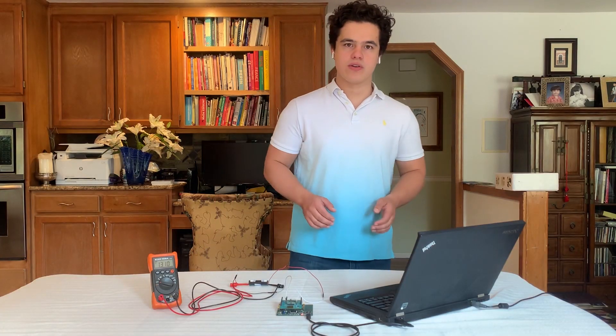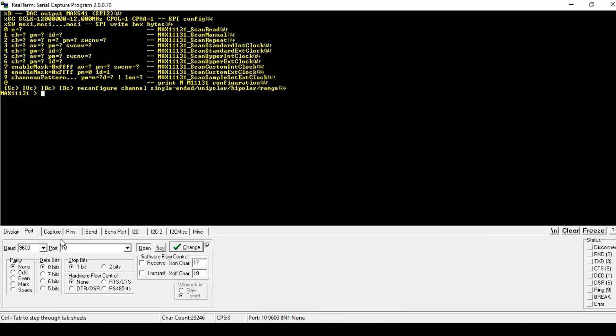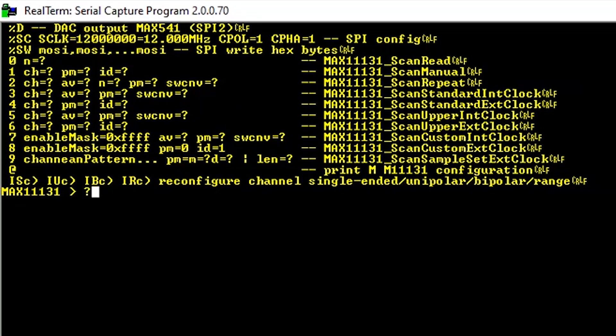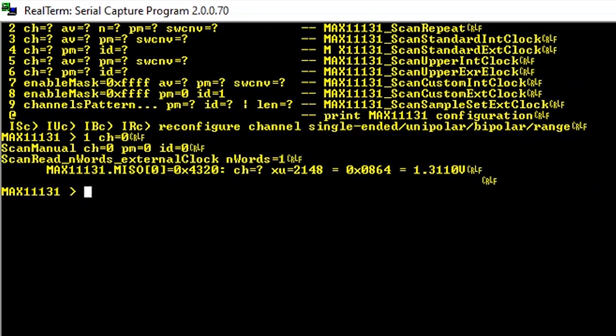So if we go to our serial terminal emulator here, right now we're using RealTerm. If we press question mark, then we get a variety of options for how we can interface with this board. In this case, what we're going to do is we're going to press one and then channel is equal to zero because we have our positive terminal connected to AN0.